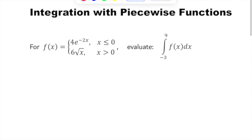Take a look at this. We have this piecewise function f(x) and we're trying to integrate this from negative 3 to 9.